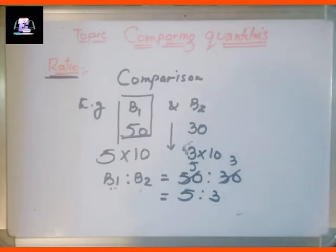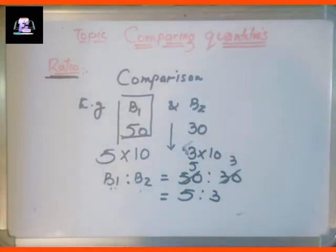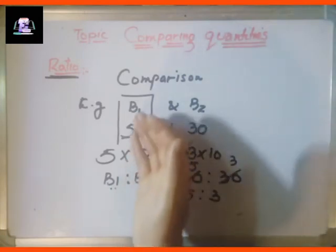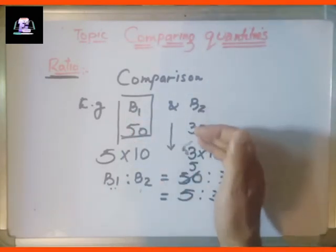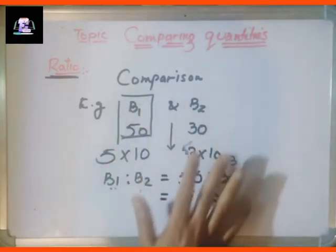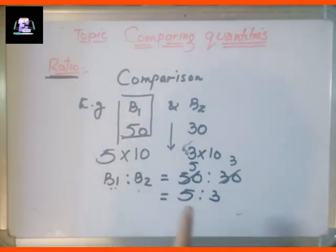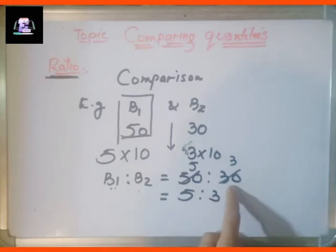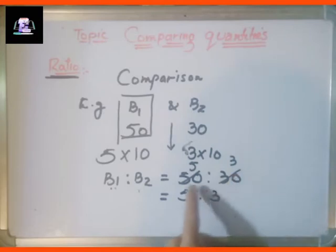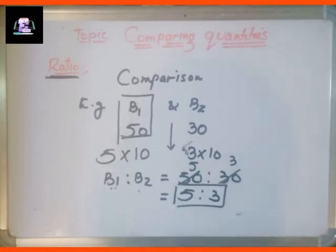This concept of ratio helps us in making the comparison easily. Boy 1 scored 50 marks and Boy 2 scored 30 marks. To compare, we write B1 is to B2, putting the marks secured by Boy 1 to marks secured by Boy 2, and reduce it to get 5 is to 3.